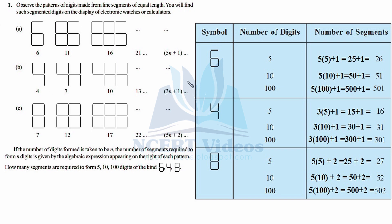Similarly for digit 4, the number of segments can be calculated with the formula 3n + 1. Putting n = 5: 3×5 + 1 = 16 segments are required for 5 digits of digit 4. For 10 digits: 3×10 + 1 = 31. For 100 digits: 3×100 + 1 = 301.